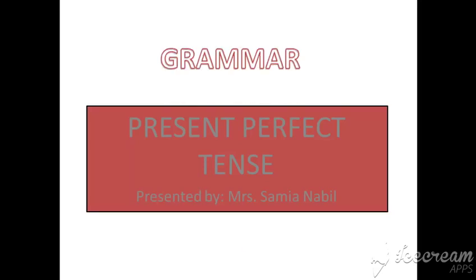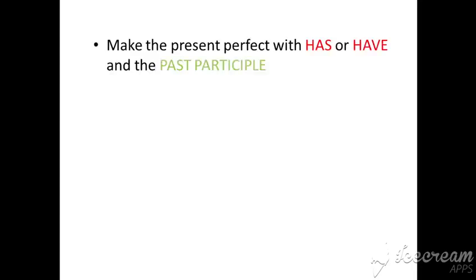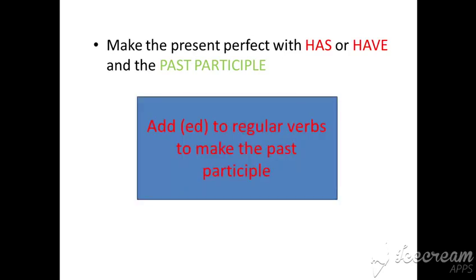We form the present perfect tense by using 'has' or 'have' and the past participle. 'Has' is used for he, she, it. 'Have' is used for I, we, you, they. The past participle is the third form of the verb. If we have regular verbs, we just add -ed to form the past participle.